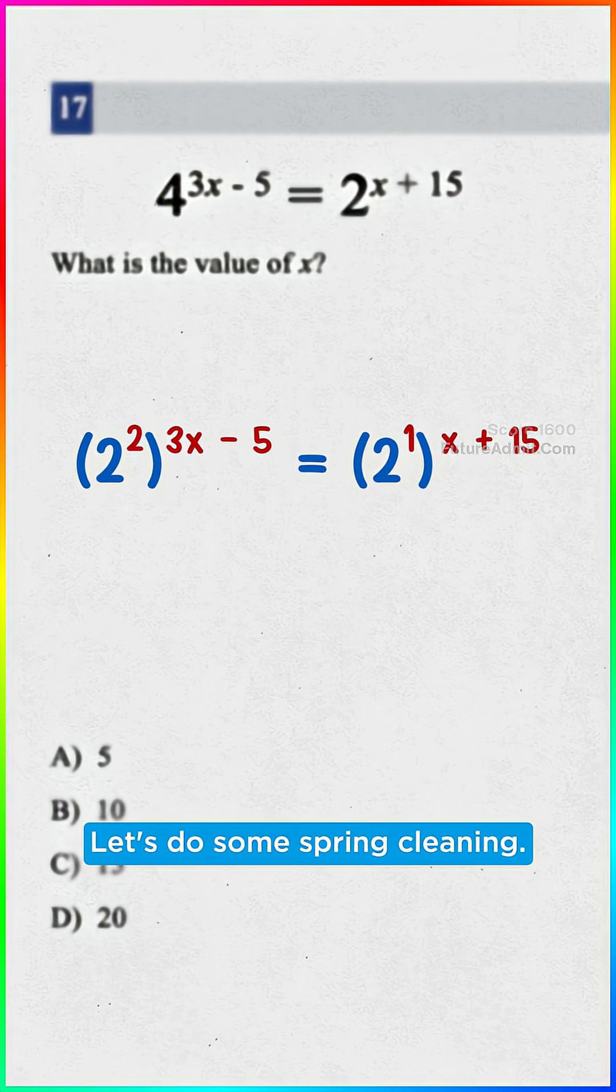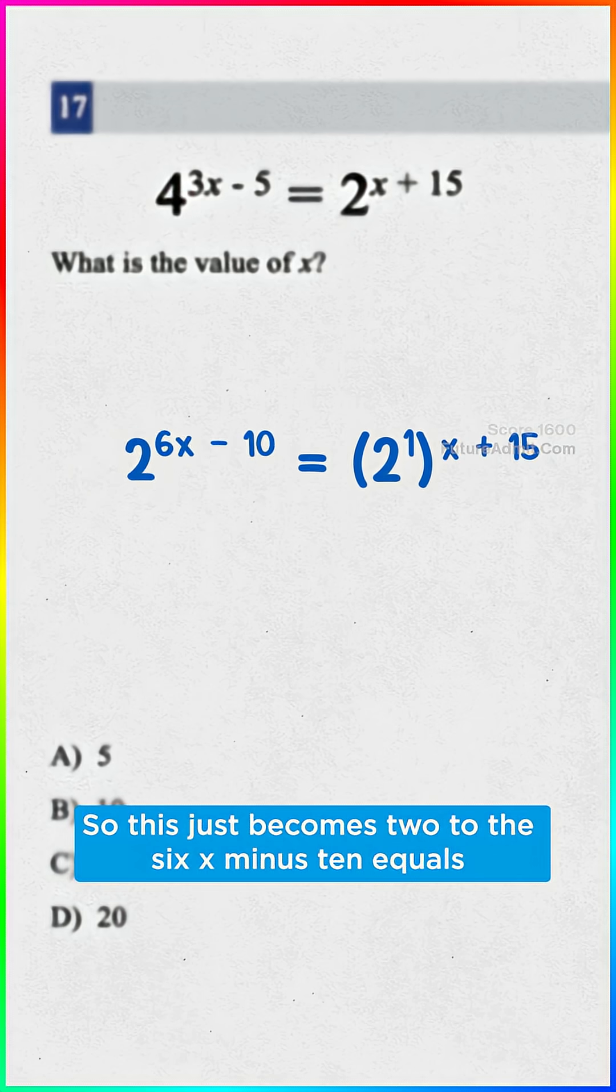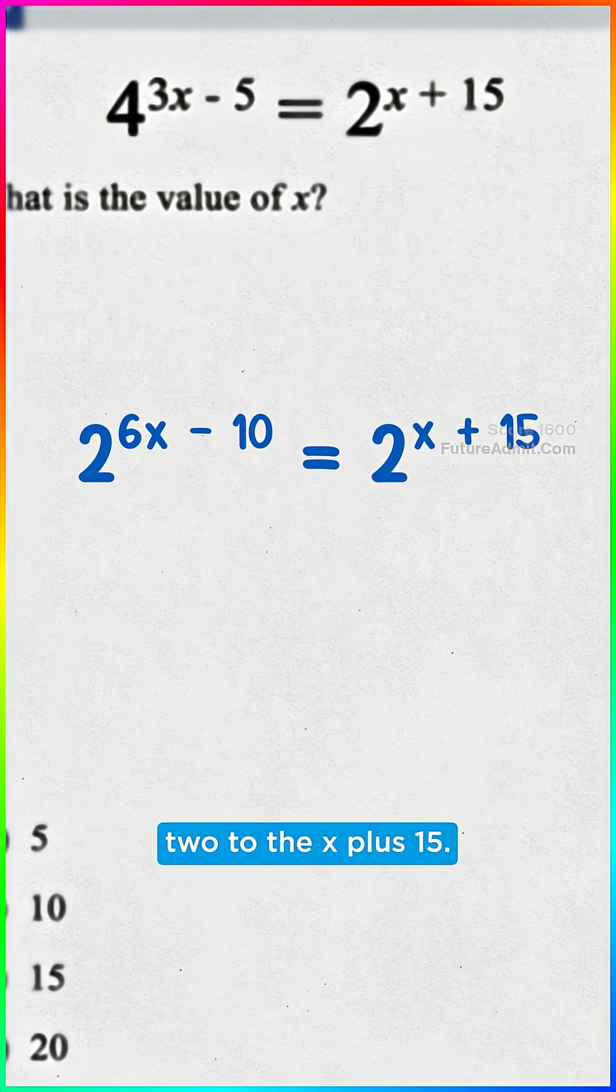Exponent to an exponent. Let's do some spring cleaning. We can multiply these exponents, so this just becomes 2 to the 6x minus 10 equals 2 to the x plus 15.